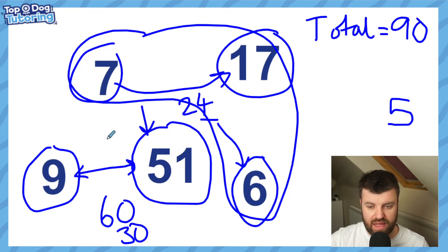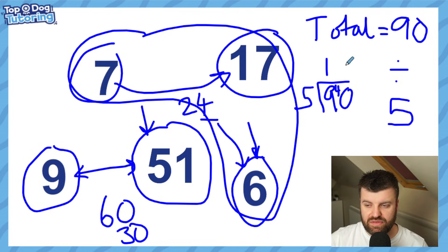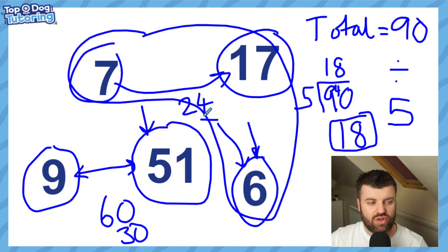When we have the total and we know how many data points there are, working out the mean average is very easy. Take the total and divide it by how many data points there were - 90 divided by 5. Using the bus stop method: fives into nine go once with four remaining, fives into 40 go eight times. Therefore, the average score was 18. You'll notice no one actually scored 18. It represents the rough middle line.